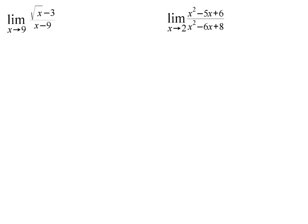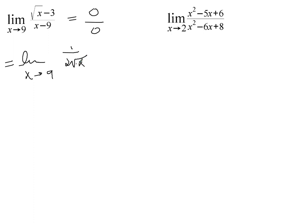Here are a couple more examples of where we could end up using some of the other methods. If x is approaching 9, this ends up being 3 minus 3, which is 0, over 9 minus 9, which is 0 — another indeterminate form. So we can use L'Hôpital's rule and end up with 1 over 2√x — that being the derivative of √x in the numerator — over 1, which is 1 over 2 times √9, or 3, which is 1/6.